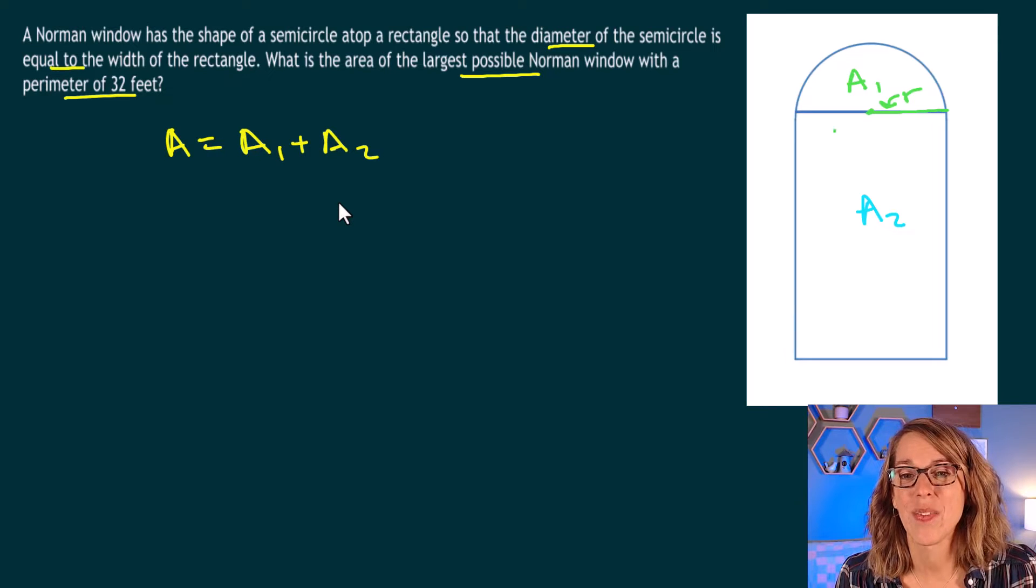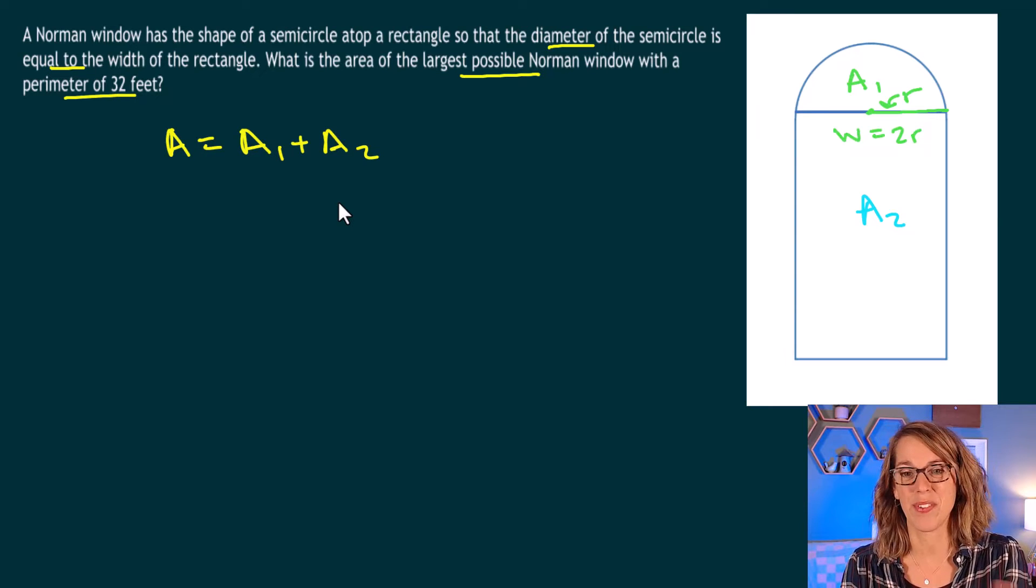We can instead say that the width is equal to two times the radius. You can leave the diameter if you want. We also need a length in here, so I've got a length right here.